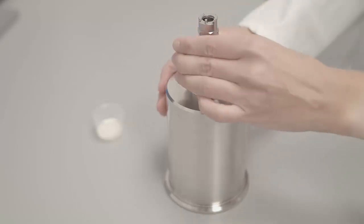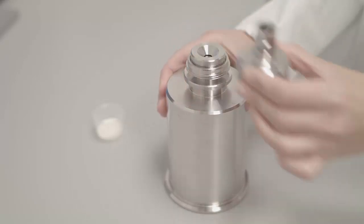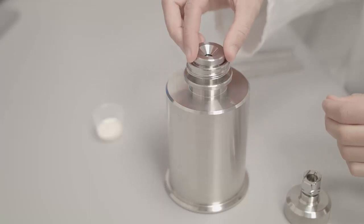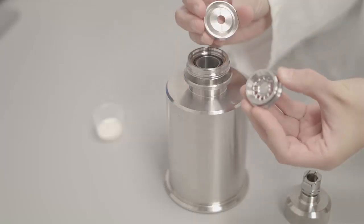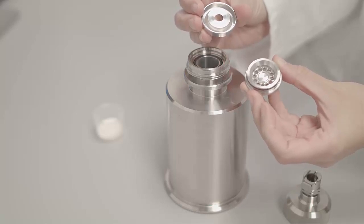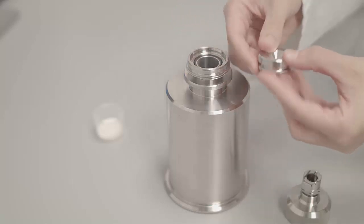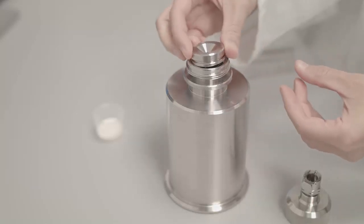Looking at the sample dispersion unit in more detail, the SDU contains a dispersion spool into which sample is loaded. When compressed air is applied, the sample will undergo shear forces through the smaller holes and be dispersed into the chamber below.